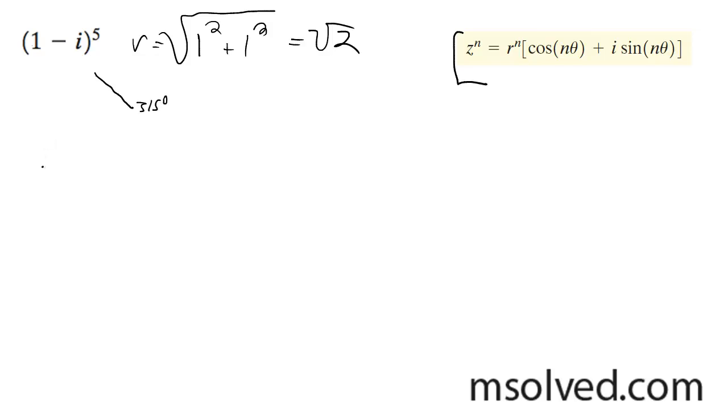So this is going to be root 2 raised to the 5th. And then we have quantity cosine of 315 times 5 plus i sine of 315 times 5.